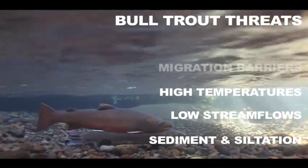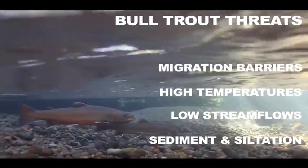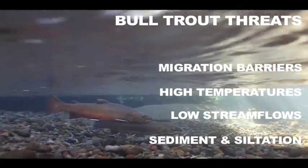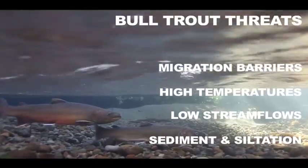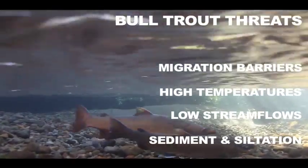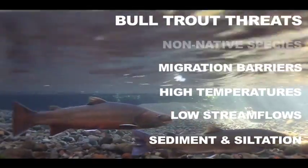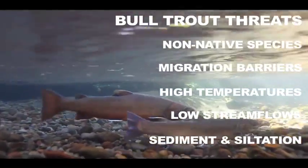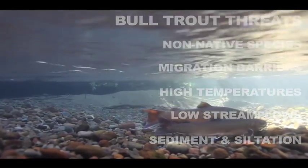We put in barriers to make these water withdrawals, and that creates passage problems. We have roads with culverts that often provide barriers to bull trout and their ability to move amongst their habitats. We also have non-native fish impacting bull trout, particularly brook trout and lake trout.